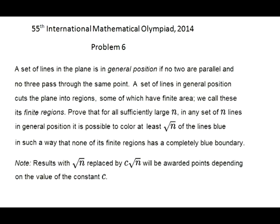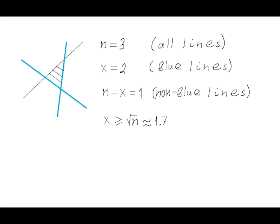International Math Olympiad 2014, Problem 6. The first challenge here is to understand the question of the problem. For n equals 3, the maximal number of lines, denoted by letter x, which we can paint blue, so that no single finite area has all sides blue, is equal to 2. The value of x is not less than the square root of 3, which is 1.7. So, the statement of the problem is true in this case.